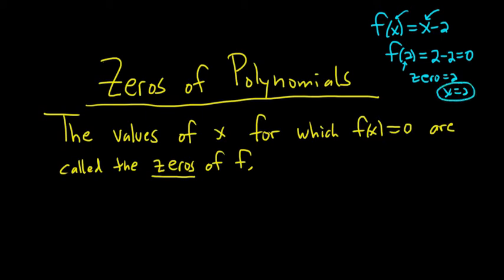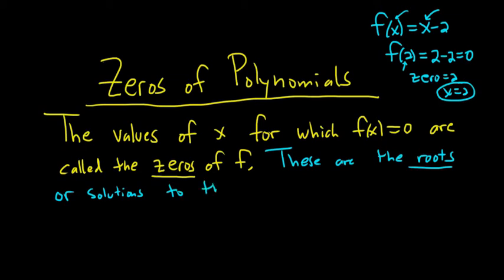So the values of x that you can plug in to the function that make it zero are called the zeros. These are also called roots, which are the roots or solutions to the equation f(x) equals zero.